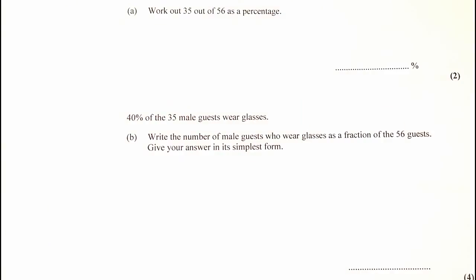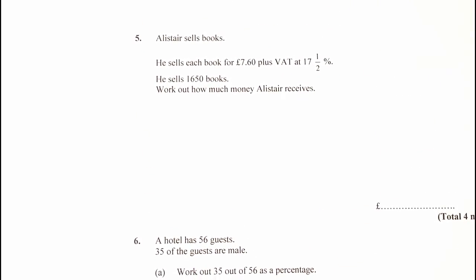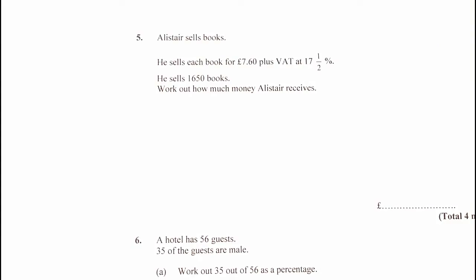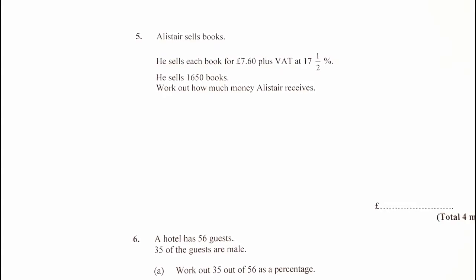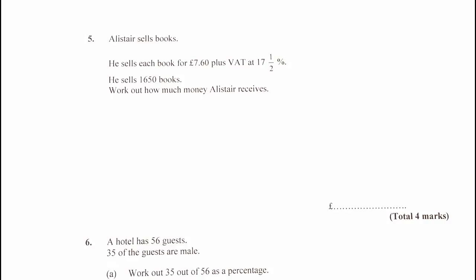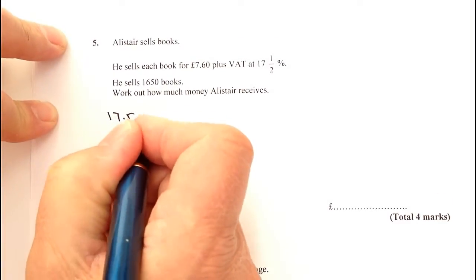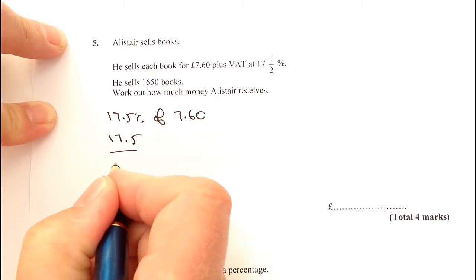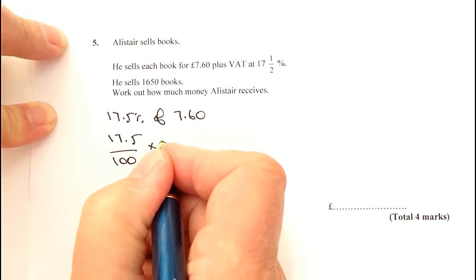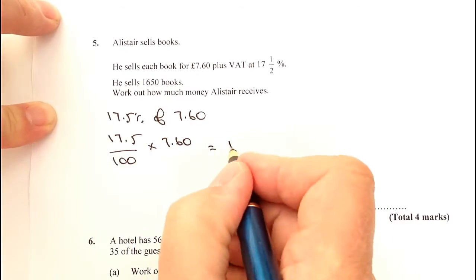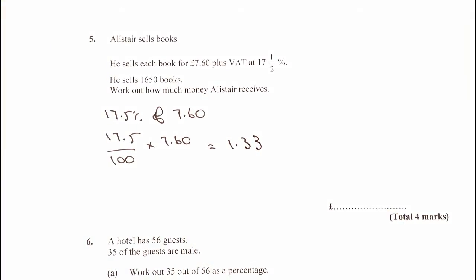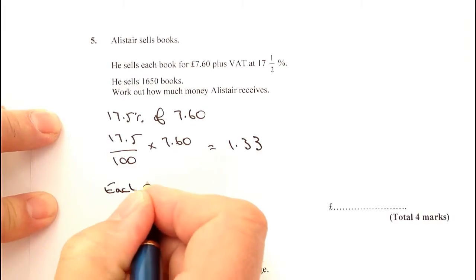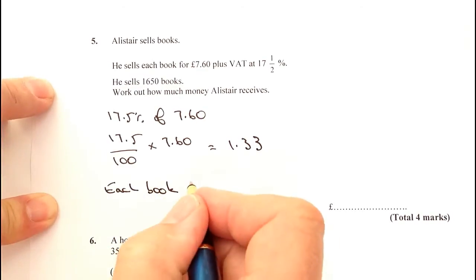In the next page, we're going to be talking about Alistair selling books. This particular one is again very similar in the way that we've set out the questions before, in that we're going to work out 17.5% of £7.60, and then add that to the original net cost of the book, which is £7.60. So 17.5% of £7.60 — put that into a calculator — the way I would do it is 17.5% multiplied by £7.60, and that will give you a VAT element of £1.33. So the total cost of each book is going to be £1.33 plus £7.60, which is £8.93.